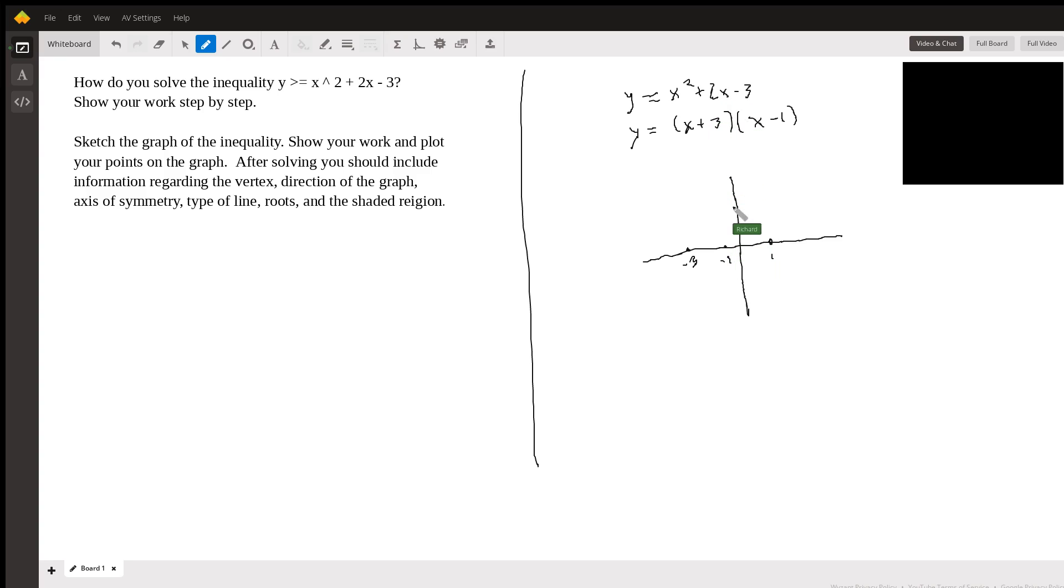So let's start by finding the vertex. We'll plug -1 into the original. So when x is -1, y is going to be 1 - 2 - 3. So that's going to be -4.